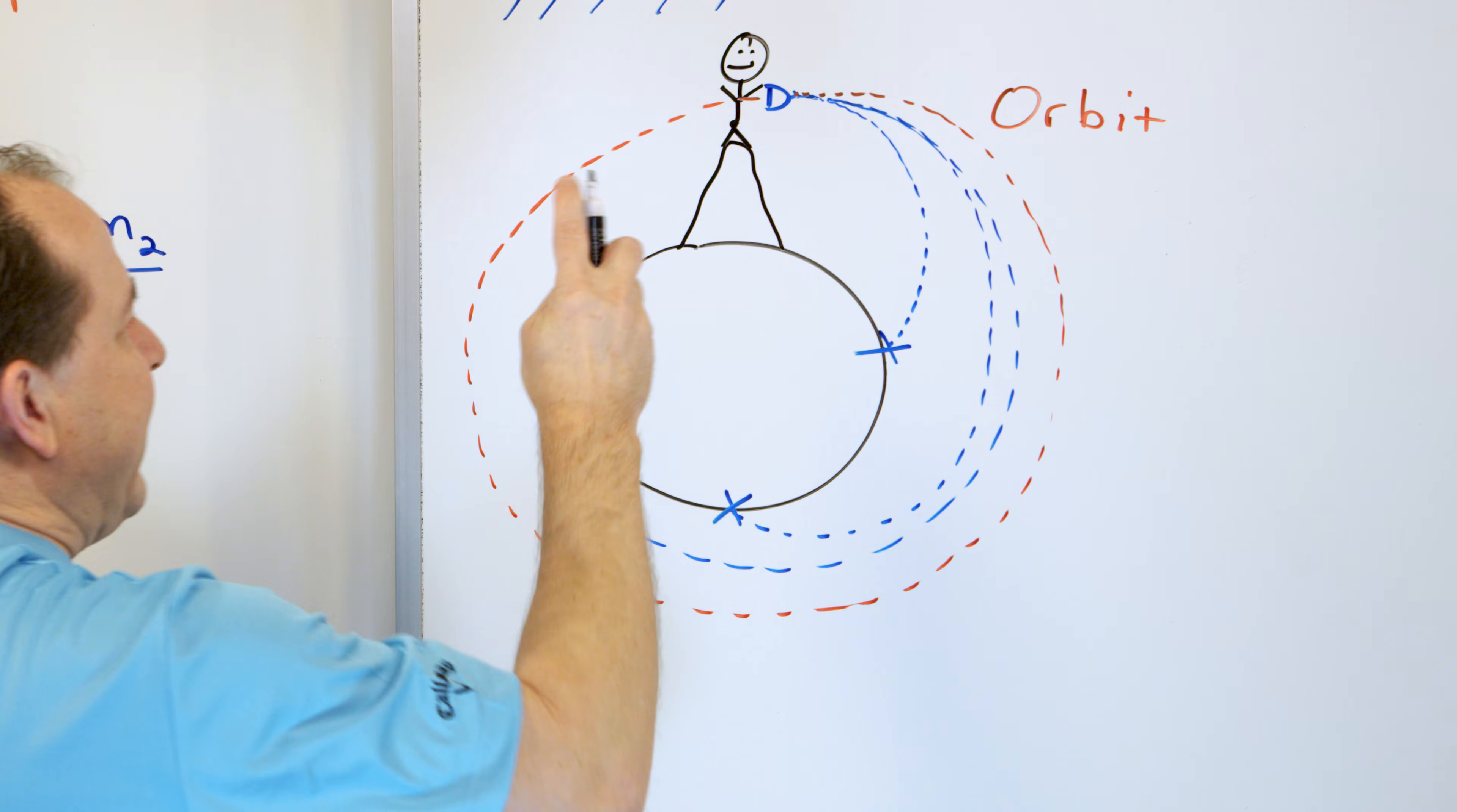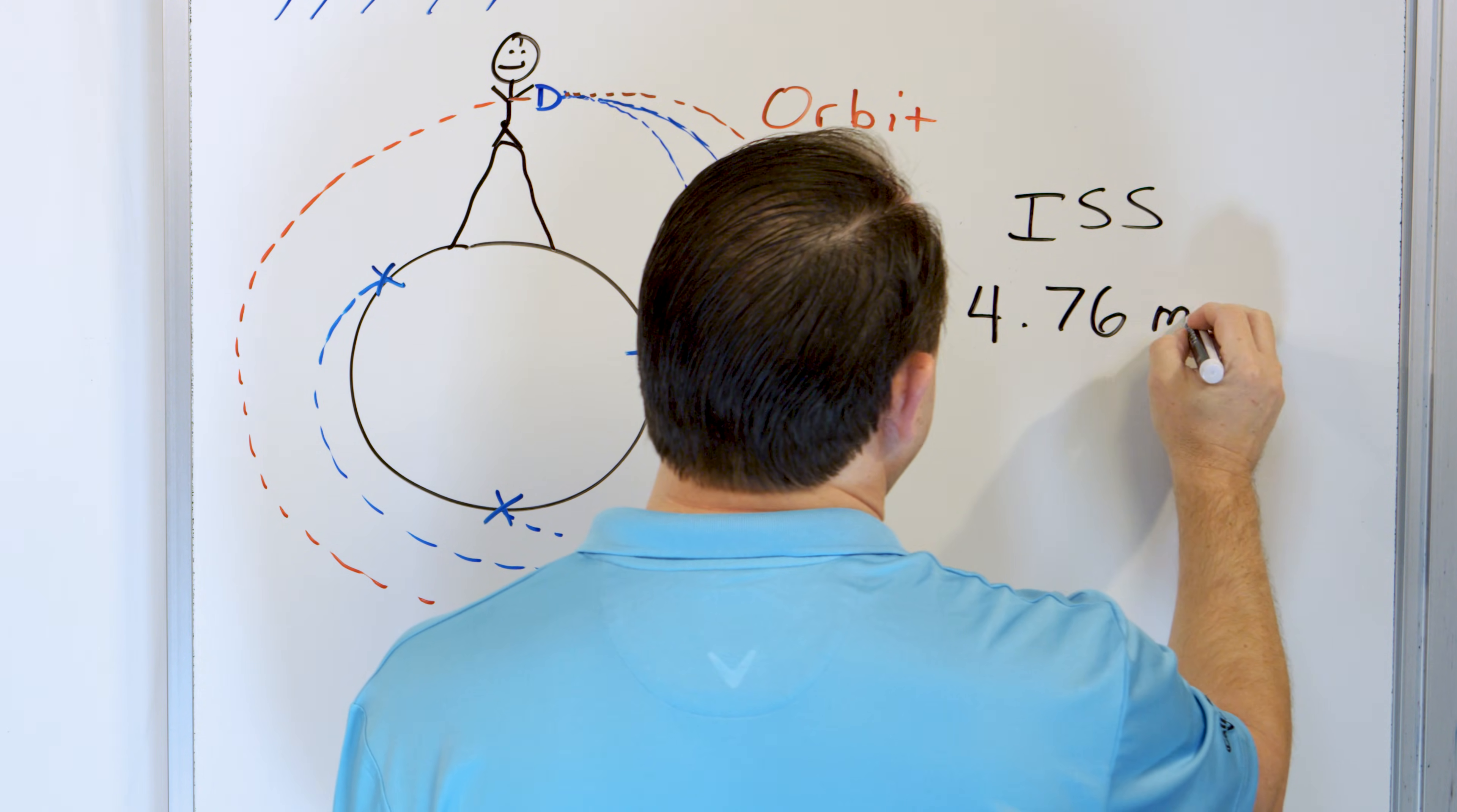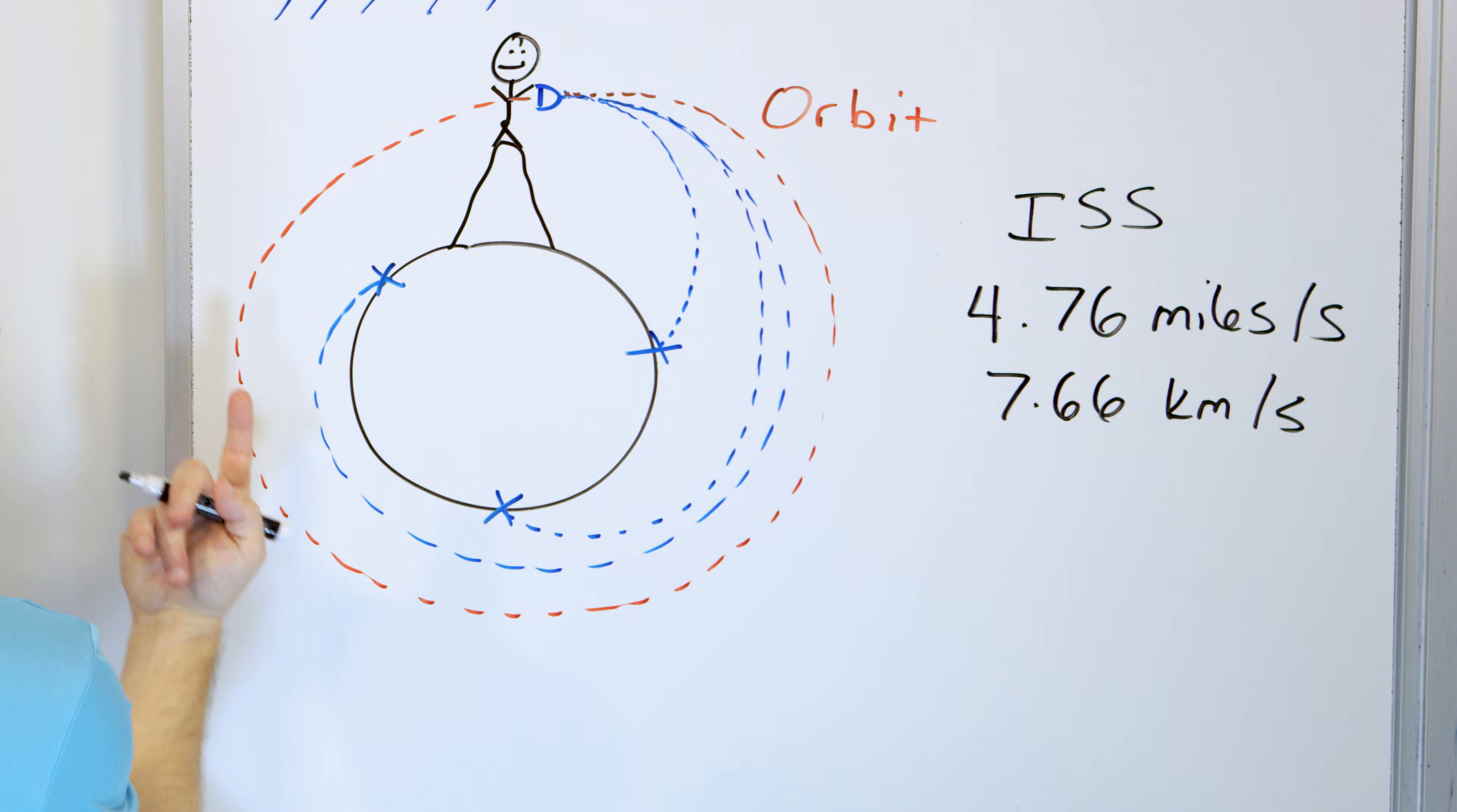Now for a spacecraft in low Earth orbit, like the International Space Station, this speed turns out to be 4.76 miles per second. Or if you like kilometers, 7.66 kilometers per second. That means you have to be traveling this fast to curve all the way around the Earth.